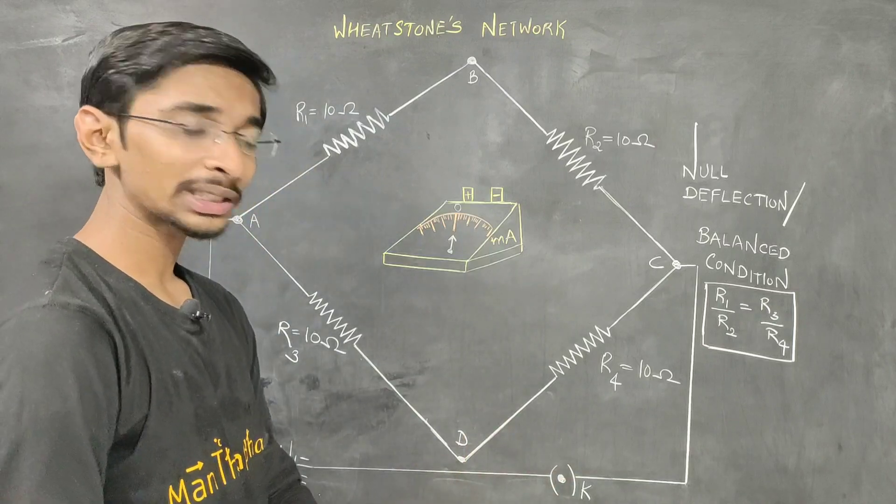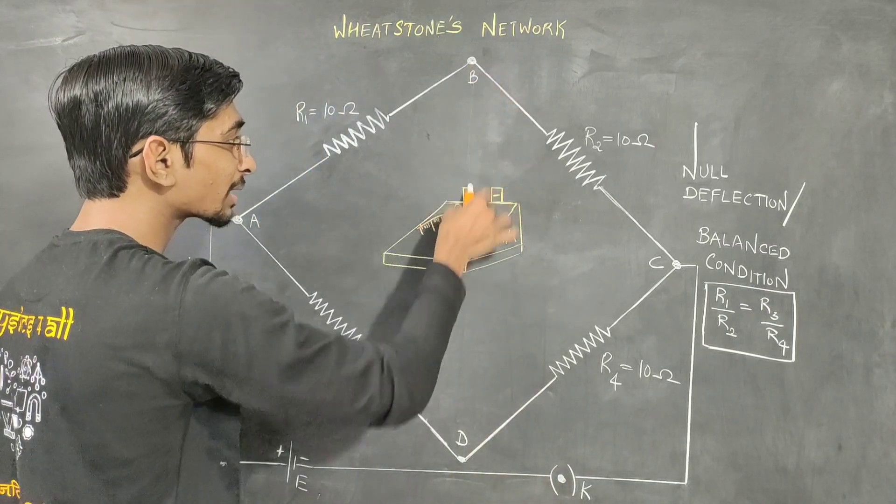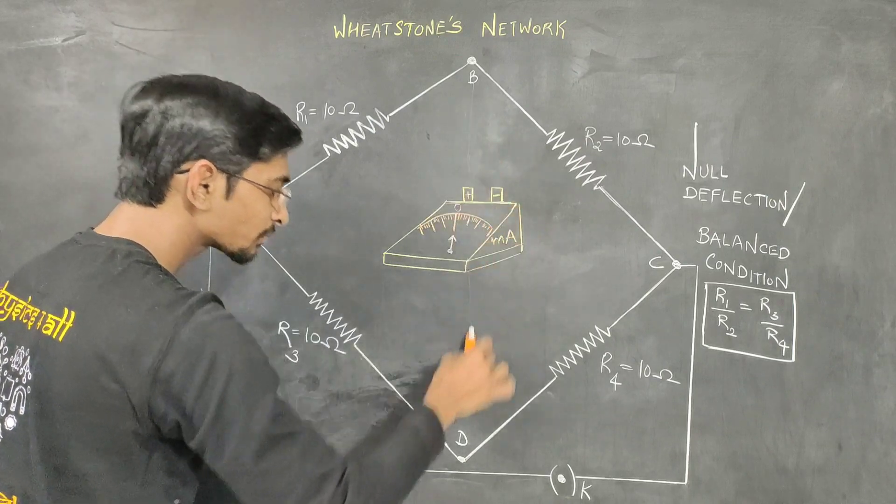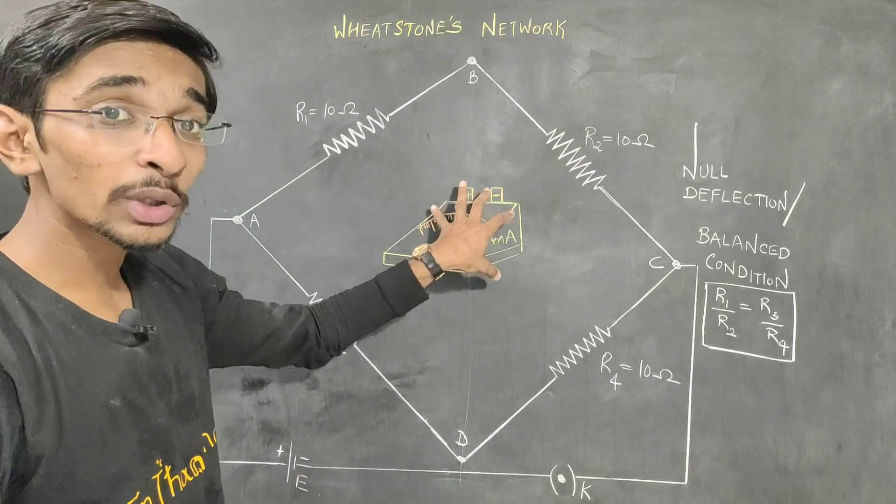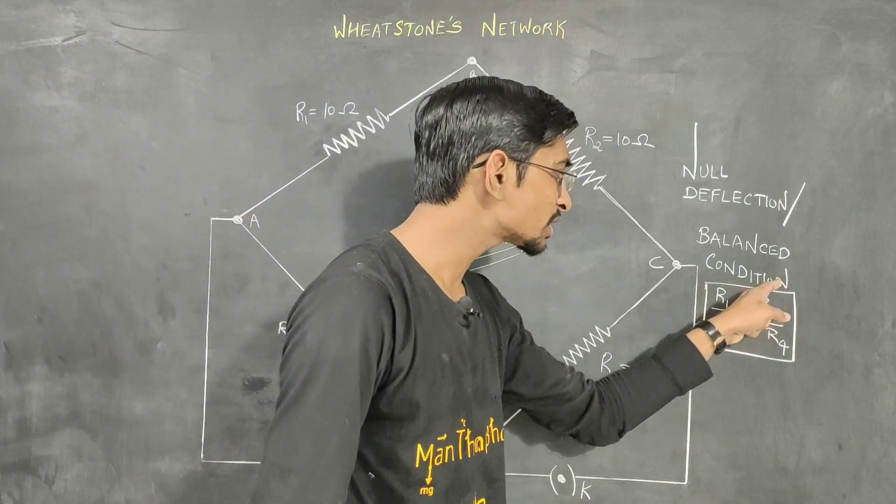This is key. When key is closed, circuit will be completed and this is connected with a galvanometer. If all the resistors are equal or if R1 by R2 is